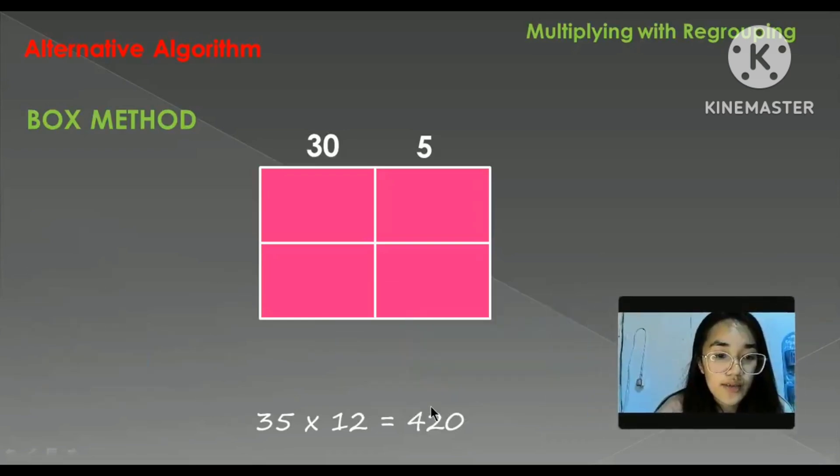And then at the side, we will have 10 and 2 because 1 is in the 10th digit. Now we will also apply: 30 times 10 is equal to 300, 5 times 10 is equal to 50, and 30 times 2 is equal to 60, and 5 times 2 is equal to 10.